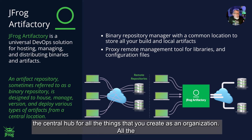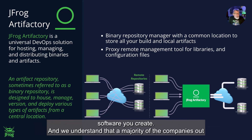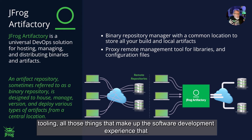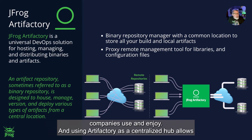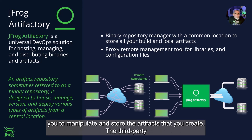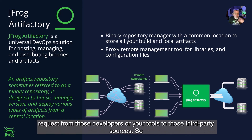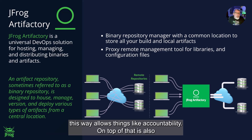The binary management system becomes the central hub for all the things that you create as an organization — all the software you create. We understand that a majority of companies out there have their own types of software development life cycles, their own CI tooling, all those things that make up the software development experience. Using Artifactory as a centralized hub allows you to manipulate and store the artifacts you create, plus third-party transitive dependencies — both direct and indirect — proxying those requests from developers or your tools to those third-party sources.